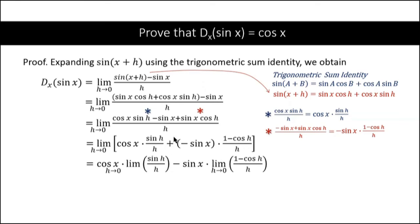Minus sine x times the limit of (1 minus cosine h) over h as h approaches zero. We notice that we have special limit formulas that we can apply to these two expressions.